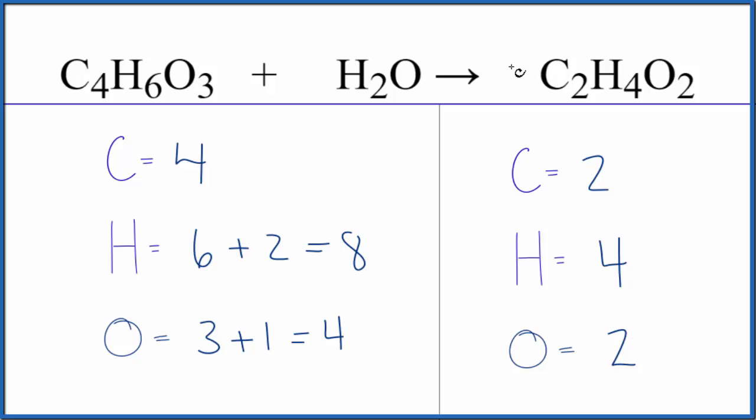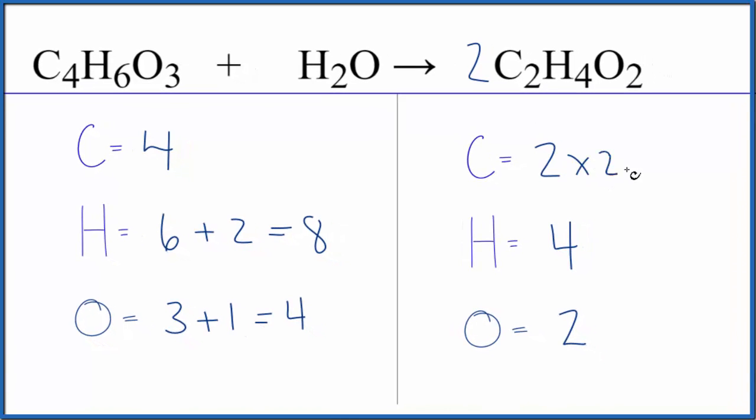It looks like if we put a two in front of the C2H4O2, two times two would give us four. The two goes to everything here. So four times the two gives us eight, and then the two times the two gives us four.